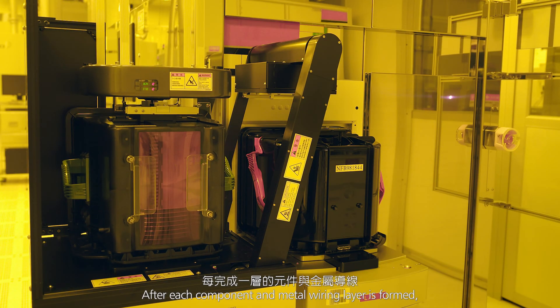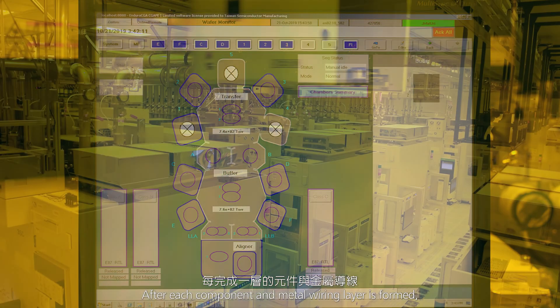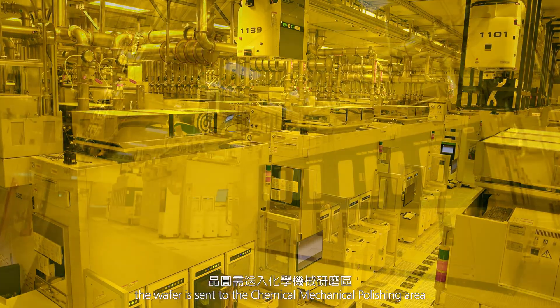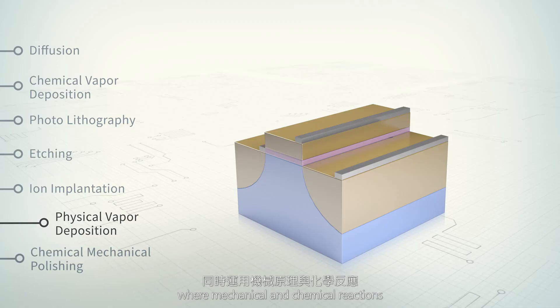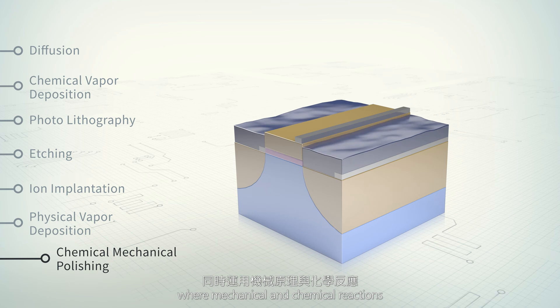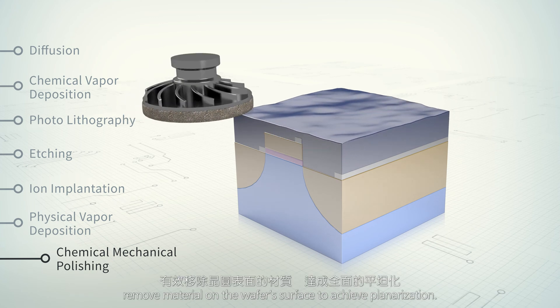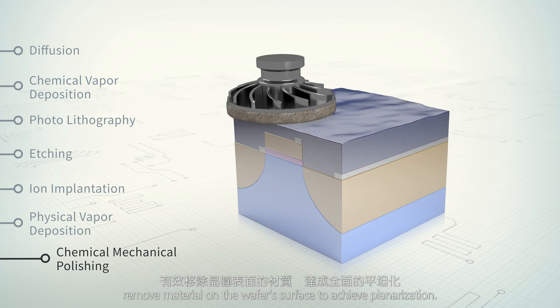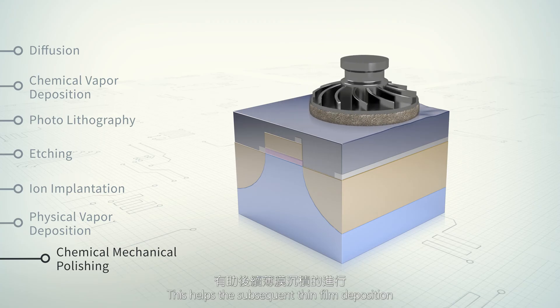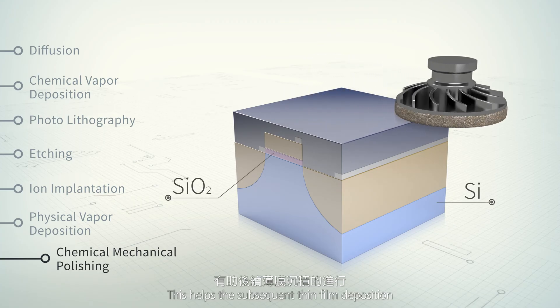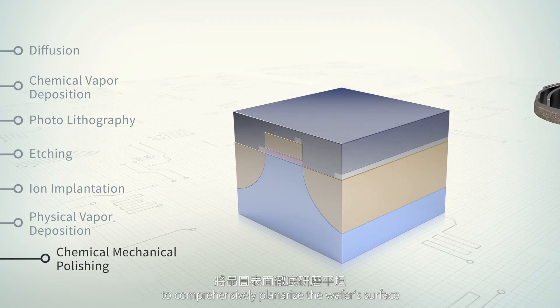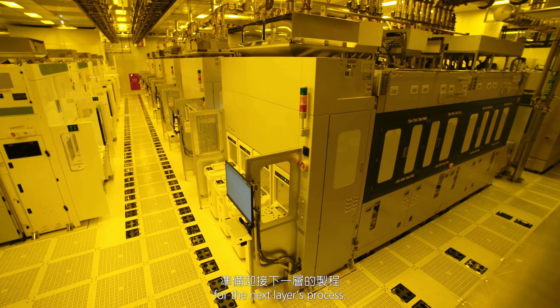After each component and metal wiring layer is formed, the wafer is sent to the chemical mechanical polishing area, where mechanical and chemical reactions remove material on the wafer's surface to achieve planarization. This helps the subsequent thin film deposition to comprehensively planarize the wafer's surface for the next layer's process.